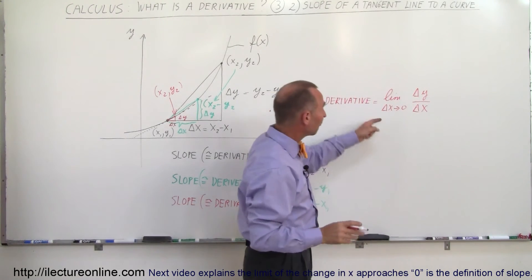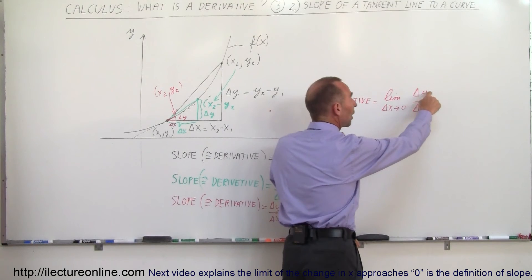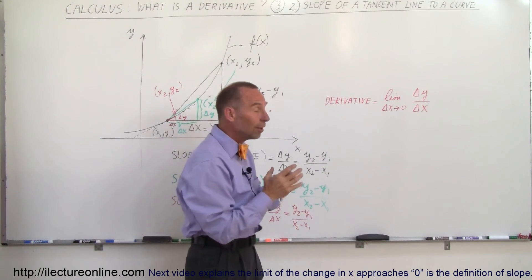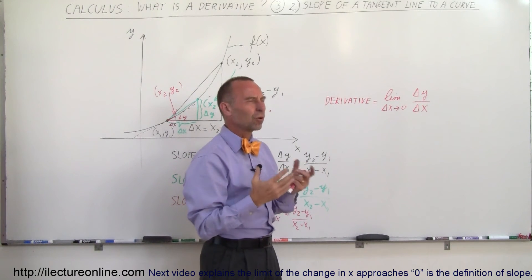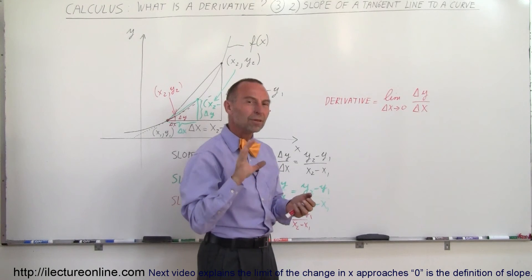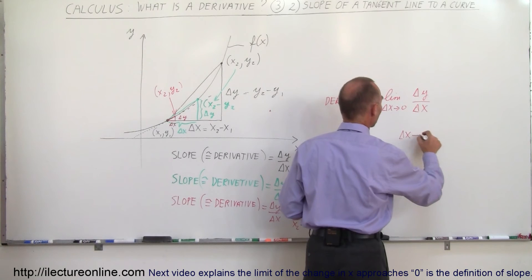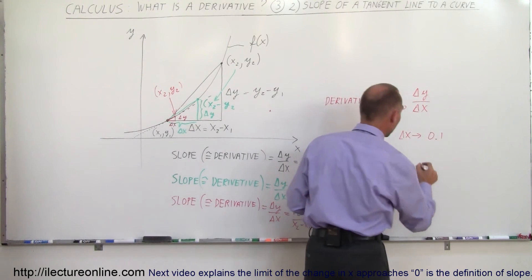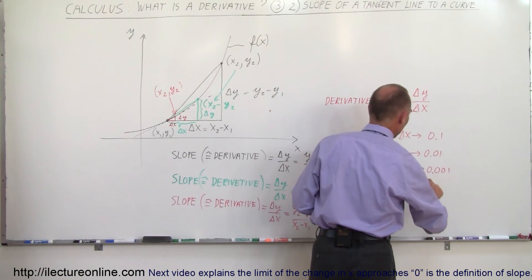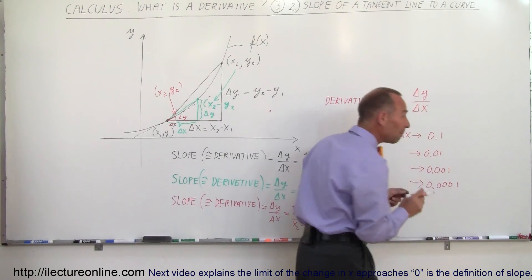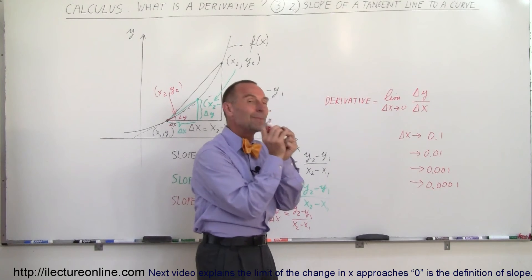Wait a minute — you can't divide by zero. Well, you don't have to in a way, because what happens to delta y when delta x goes to zero? When delta x goes to zero, delta y goes to zero too. So now we have a zero divided by zero situation — that doesn't work. But don't panic, because what we're doing here is we're letting delta x become smaller and smaller. So delta x becomes 0.1, then 0.01, then 0.001, then 0.0001, and so forth — smaller and smaller, so small that it's virtually zero but not quite zero.